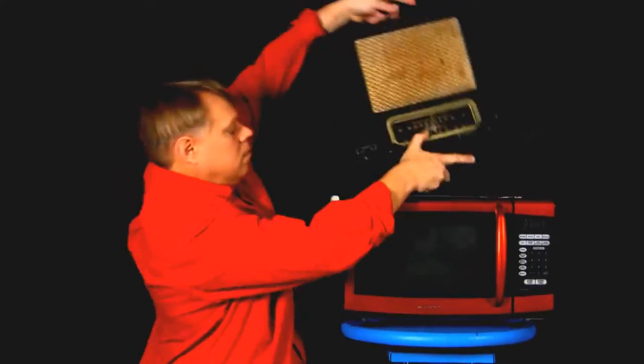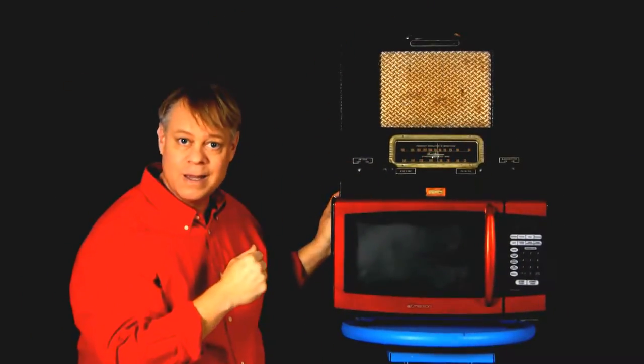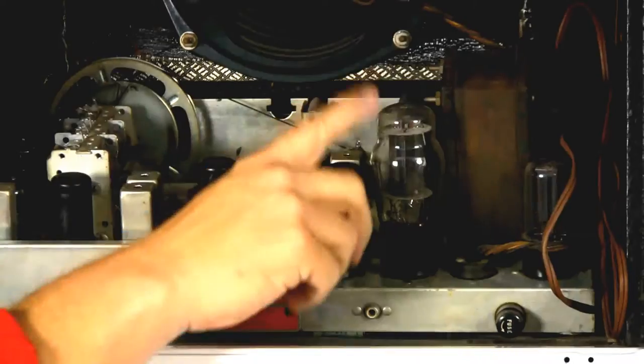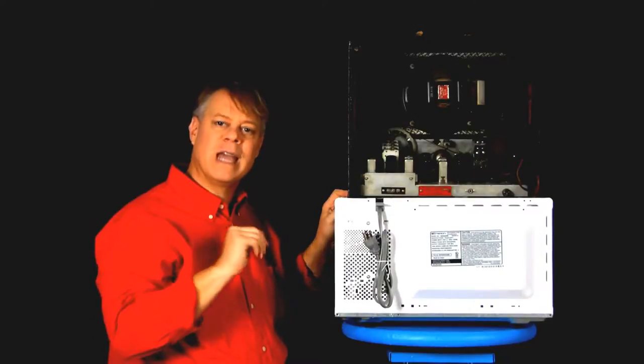Now if you picture a vacuum tube at all, it's likely in a radio like this. Inevitably, tiny transistors and microchips replace clunky vacuum tubes, but it's too soon to relegate them to the museum.